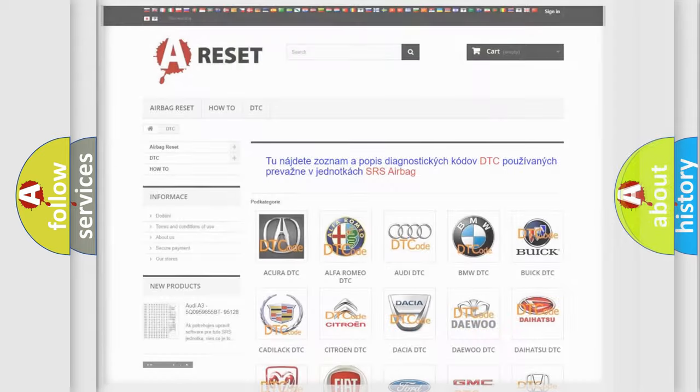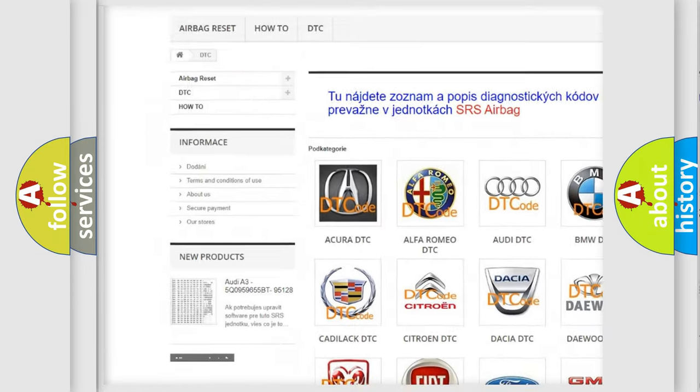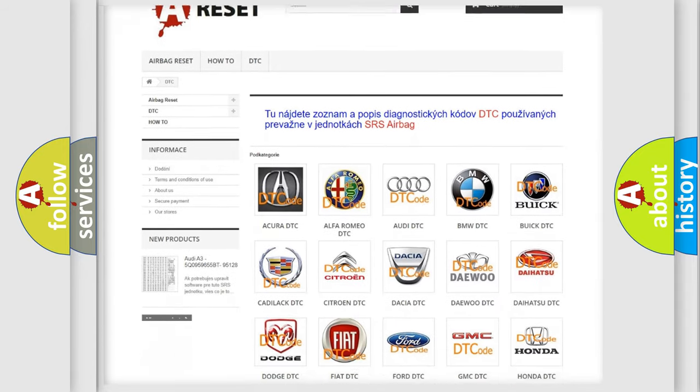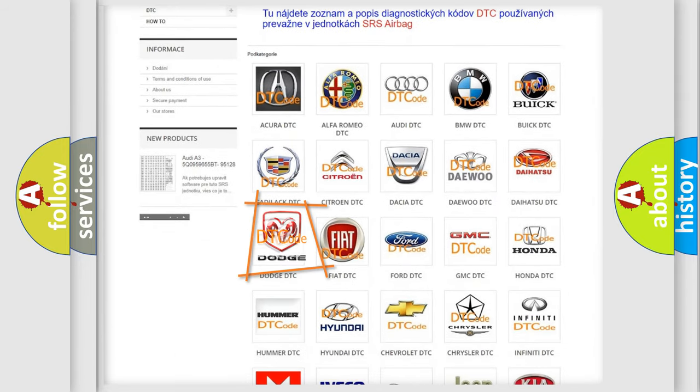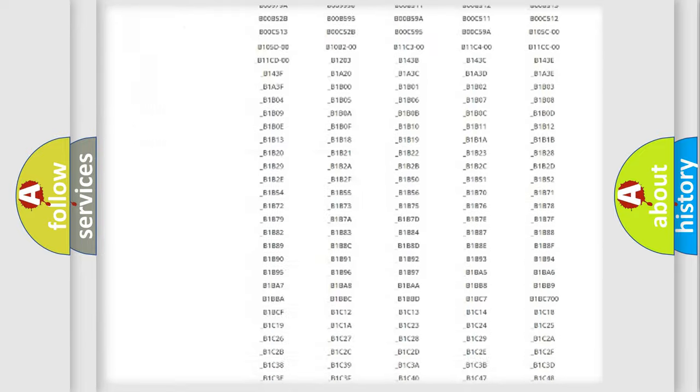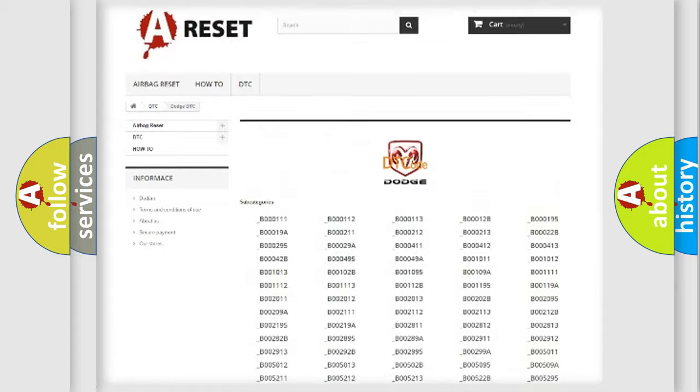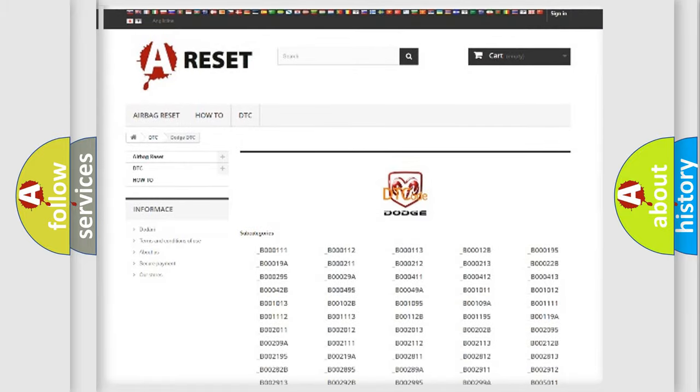Our website airbagreset.sk produces useful videos for you. You do not have to go through the OBD2 protocol anymore to know how to troubleshoot any car breakdown. You will find all the diagnostic codes that can be diagnosed in Dodge vehicles. Also many other useful things.